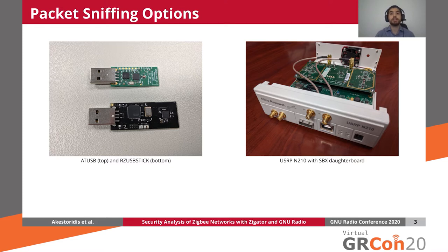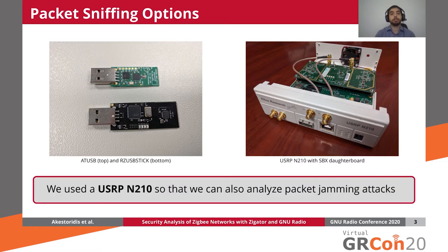Alternatively, we can use a software-defined radio to capture IQ signals and perform demodulation in software with GNU Radio. For our testbed, we decided to use a software-defined radio, and in particular a USRP N210, because the ability to capture IQ signals allowed us to also analyze the effectiveness of the jamming attacks that we implemented.